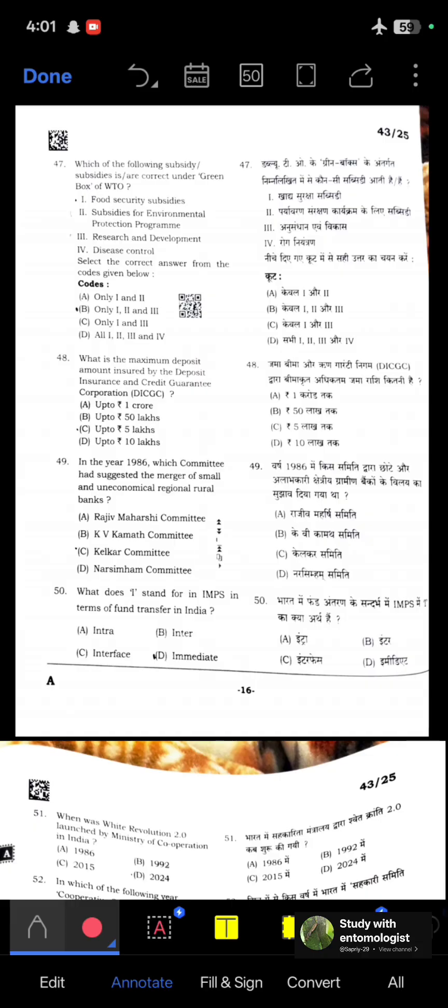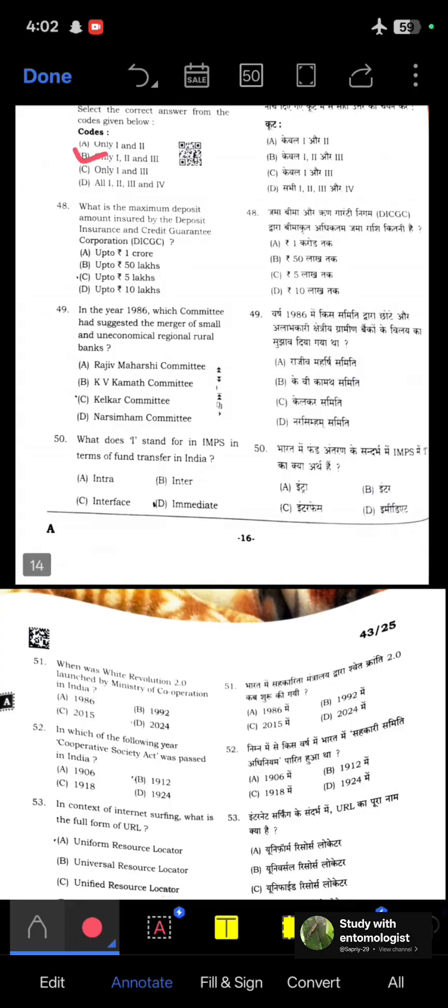Which of the following subsidies are correct under green box of World Trade Organization? Food security subsidies, subsidies for environmental protection programs, research and development, disease control. Only food security, subsidies for environment, and research and development subsidies are given under the green box of WTO. What is the maximum deposit amount insured by DICGC? Up to 5 lakhs.